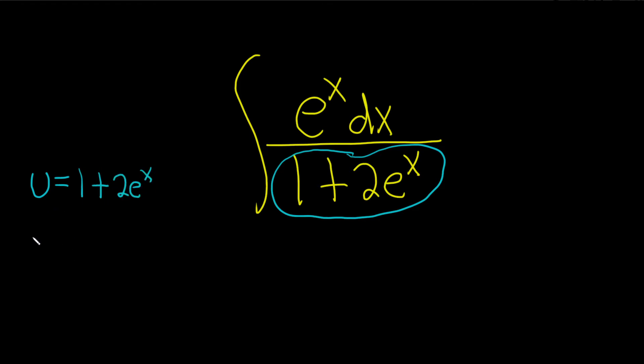So now we'll take the derivative. So du, the derivative of 1 is 0, the 2 hangs out, and the derivative of e to the x is e to the x. So here you get e to the x dx.